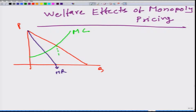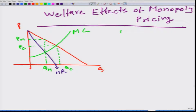If this firm is operating in the perfectly competitive market, then the quantity supplied is going to be QC, and the market price has to be equal to PC — where C indicates the perfectly competitive market. If this firm is operating as the monopoly, the quantity supplied is going to be QM, where M denotes monopoly, and the price charged is PM. We see that PM is greater than PC, but the quantity QM is less than QC.